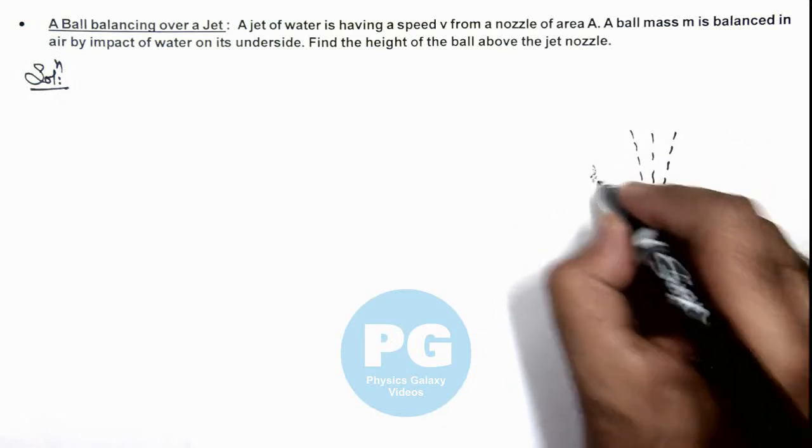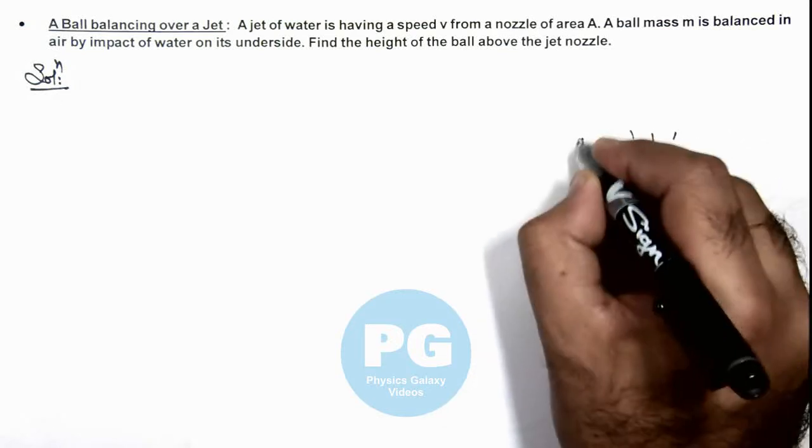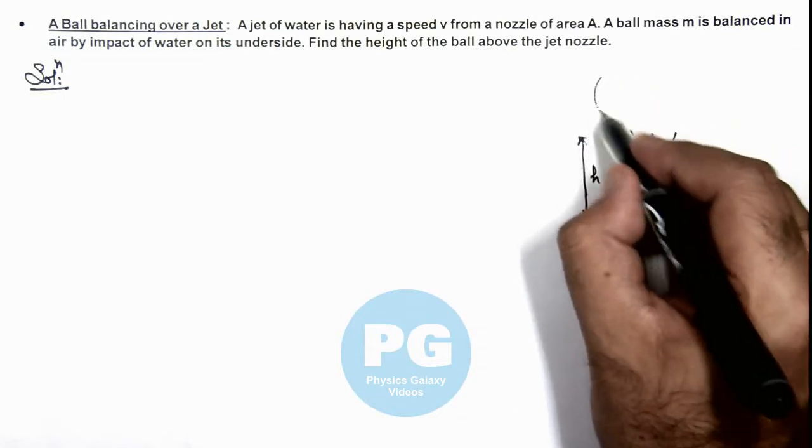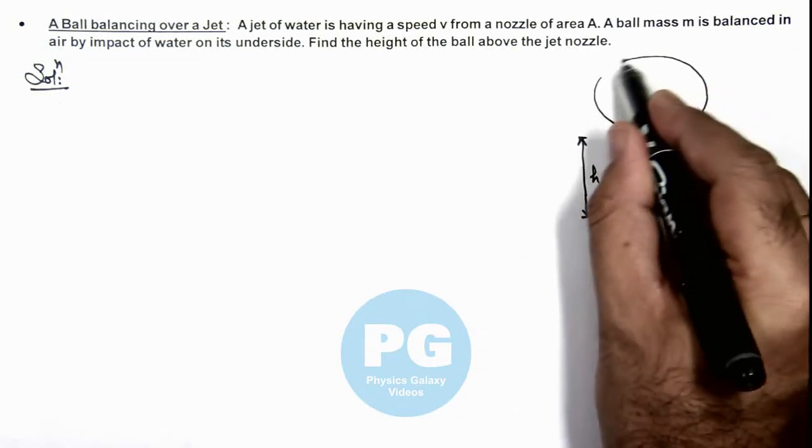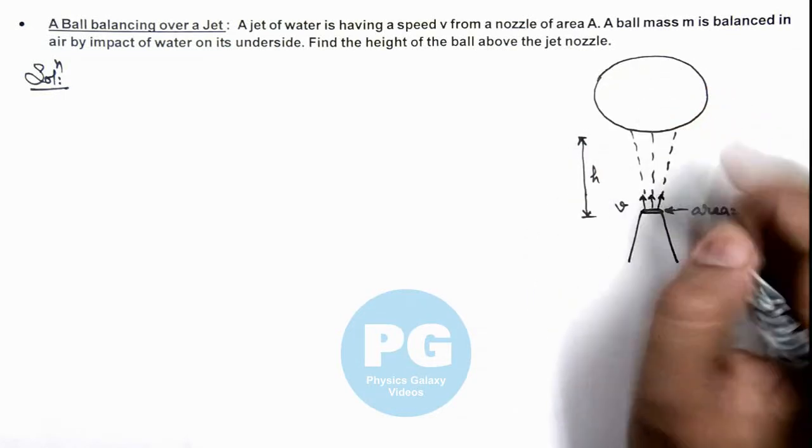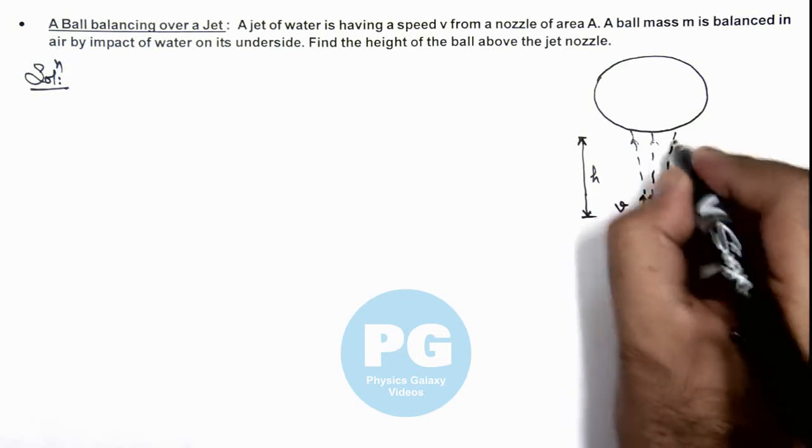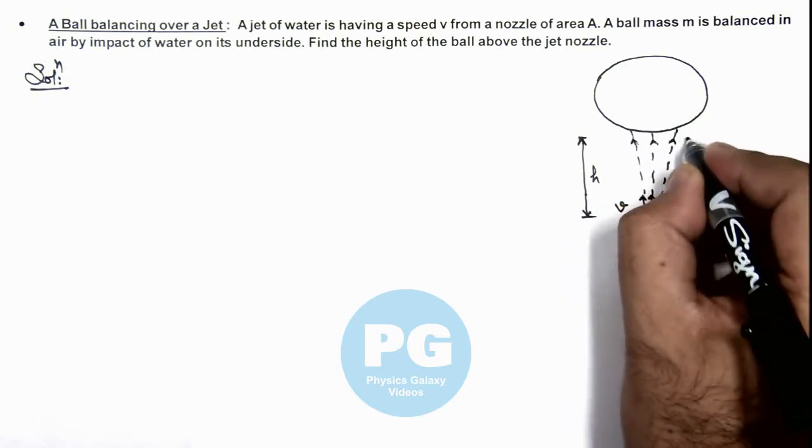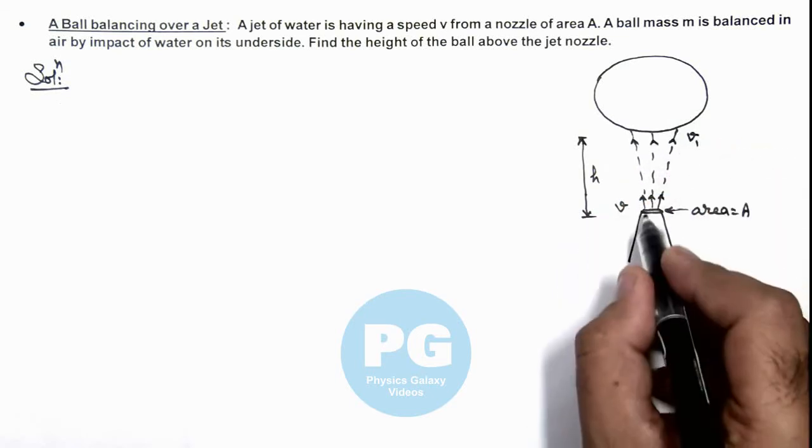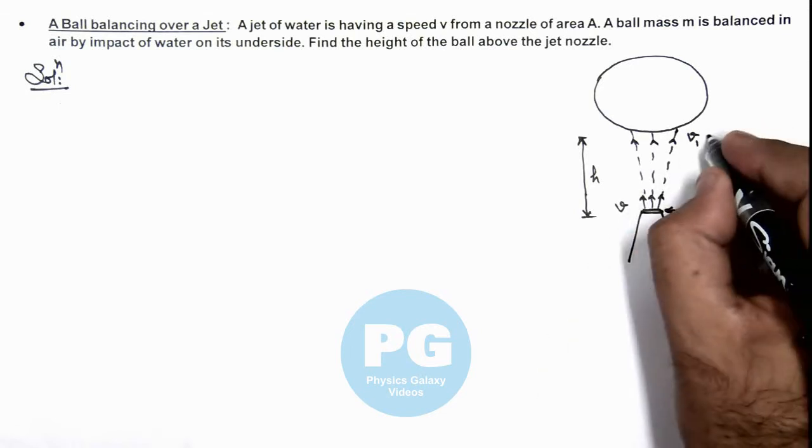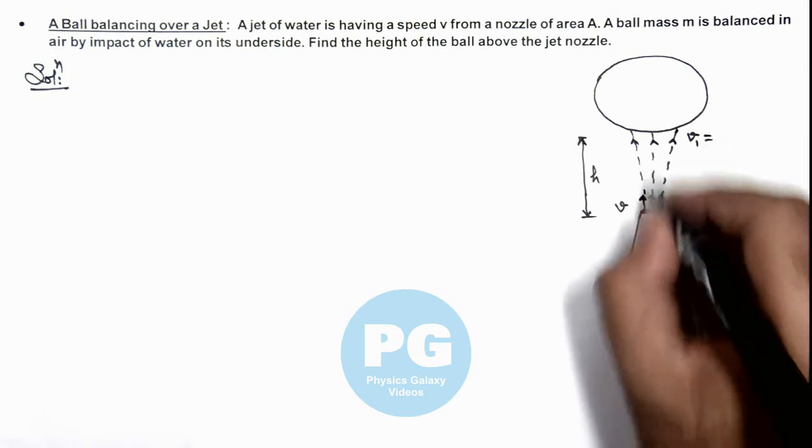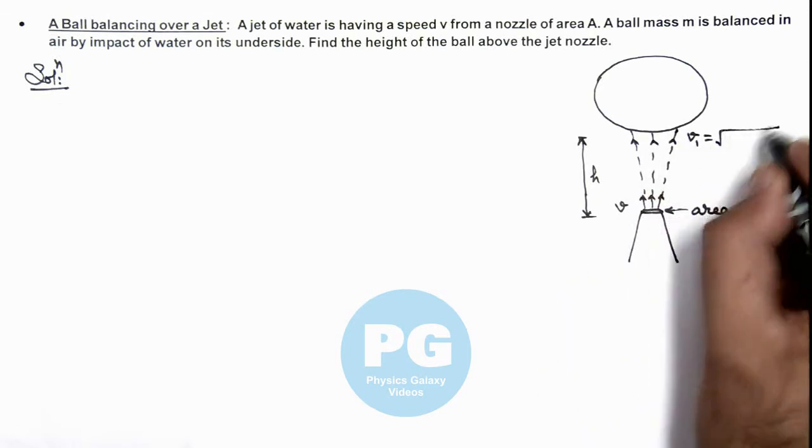And say at a height h above the nozzle, it is balancing a ball. Then in this situation, this water jet is continuously striking the ball with a velocity v1. If it is coming out with velocity v, v1 can be directly written as it is under free fall, so this is root of v squared minus 2gh.